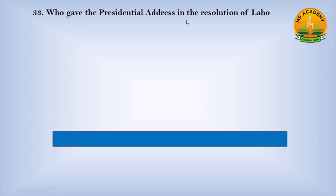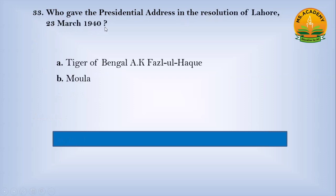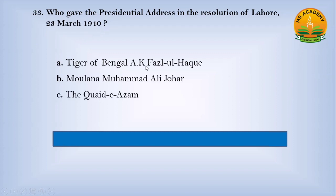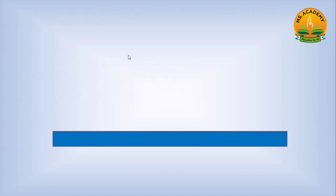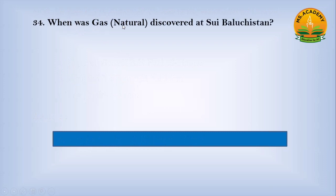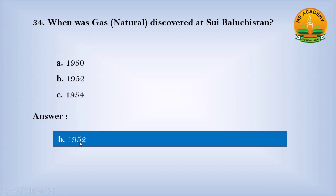Who gave the presidential address at the Lahore Resolution on 23rd March 1940? Option A, Tiger of Bengal, A.K. Fazlul Haq; Option B, Maulana Muhammad Ali Johar; Option C, the Quaid-e-Azam. Answer: A — Tiger of Bengal, A.K. Fazlul Haq. When was natural gas discovered at Sui, Balochistan? Option A, 1950; Option B, 1952; Option C, 1954. Answer: B — 1952.